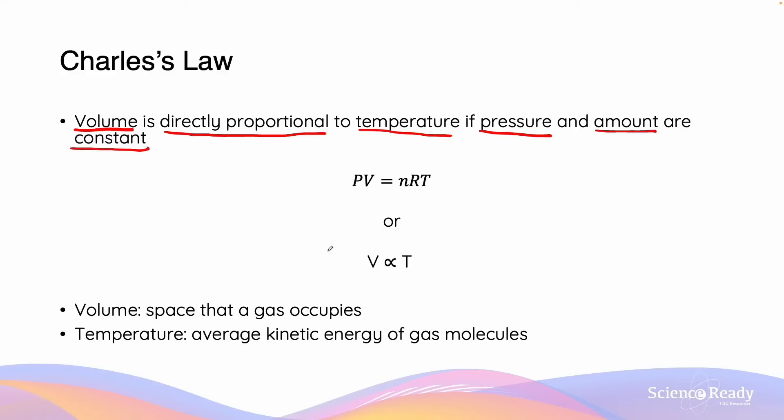This relationship can be understood by considering the ideal gas law, PV equals nRT. We can rearrange this formula by dividing both sides by P in order to get a new equation, V equals nRT divided by P. So when pressure and amounts are constant, nR divided by P is going to be a constant value, and we can say that nR over P is some constant value equal to K.